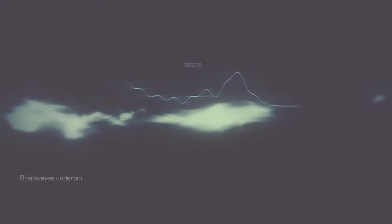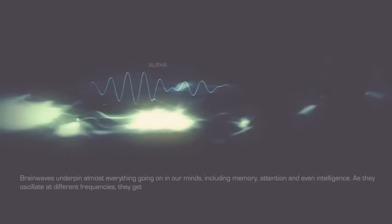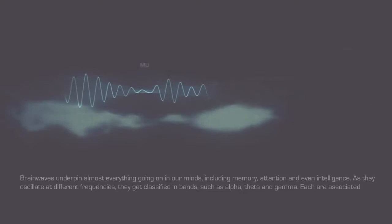Brain waves underpin almost everything going on in our minds, including memory, attention and even intelligence. As they oscillate at different frequencies, they get classified in bands such as alpha, theta and gamma, each associated with different tasks.